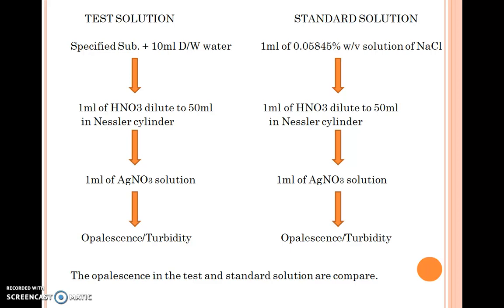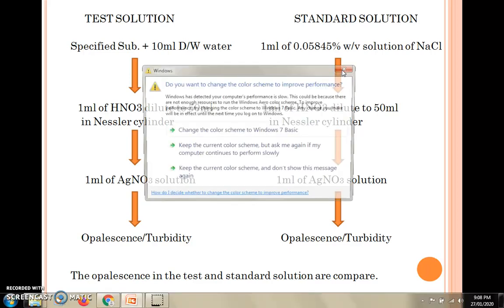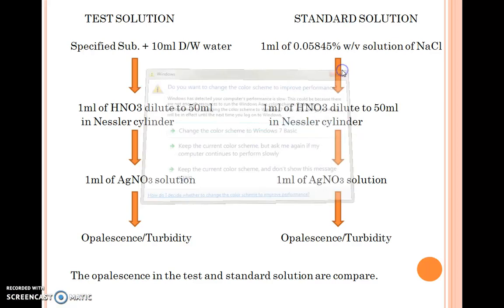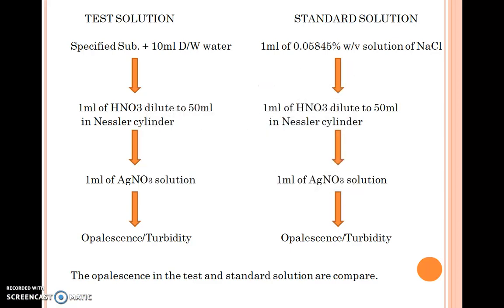For the preparation of the standard solution, take 1 ml of 0.05845% weight by volume solution of sodium chloride. Then add 1 ml of nitric acid and make up the volume to 50 ml in a Nessler cylinder. To this add 1 ml of silver nitrate solution and stir it — opalescence is produced.